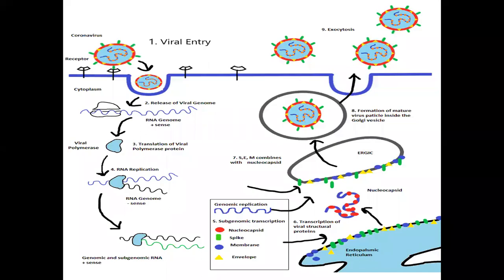Welcome back to Just By Tech. In today's video we are going to discuss the infection cycle of coronavirus, that is SARS-CoV-2 — Severe Acute Respiratory Syndrome Coronavirus 2. This is the whole infection cycle: how it enters the cells, how it multiplies, how it uses the host machineries, and finally how multiple copies of the virus are released from the cells to infect other cells.